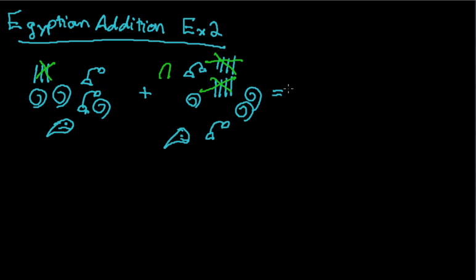Or the heel bone, not the horseshoe. I always think of it as a horseshoe, but it should represent a heel bone. So for the ones place, we have one.